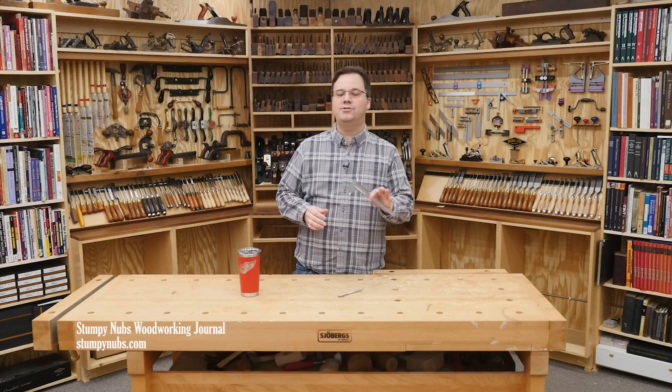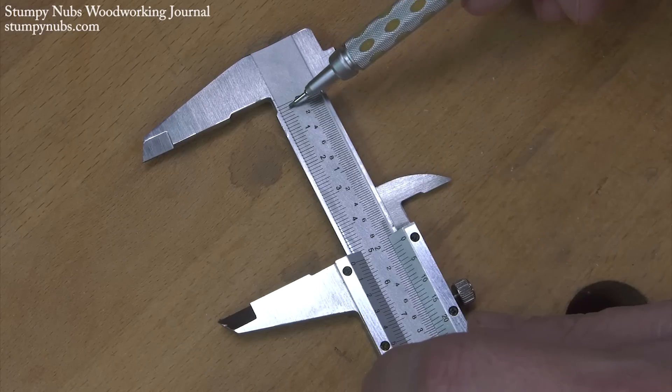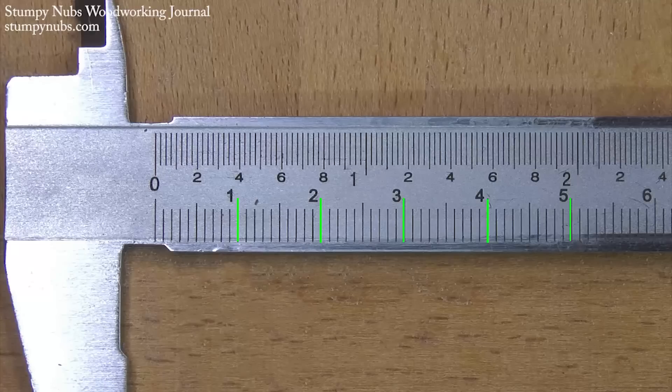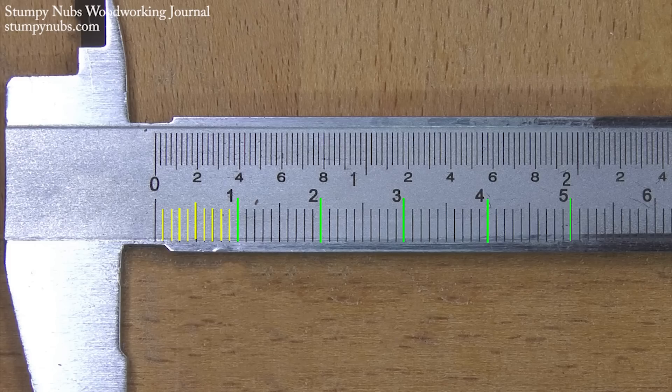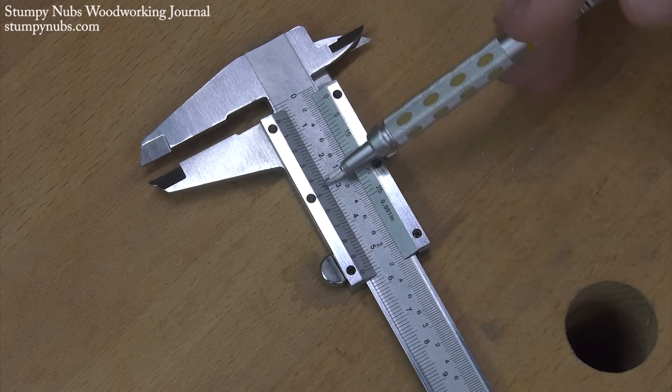Okay, rest of the world, here's how it works in metric. The bottom of the main scale is centimeters. And each centimeter is divided into ten millimeters. That's simple enough. But if you want a finer measurement, you have to work with fractions of a millimeter. And that's where the vernier scale at the bottom comes in.